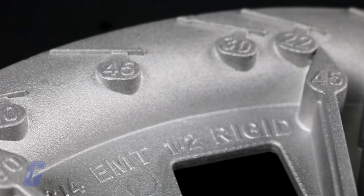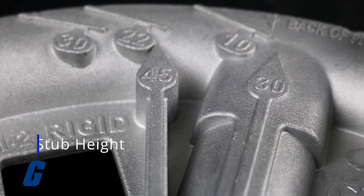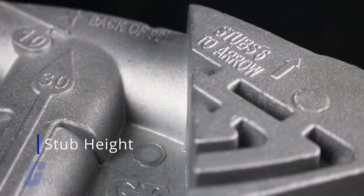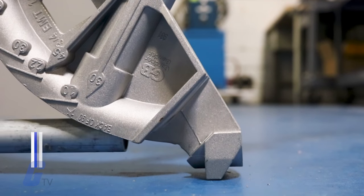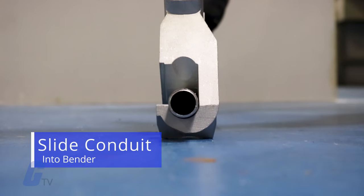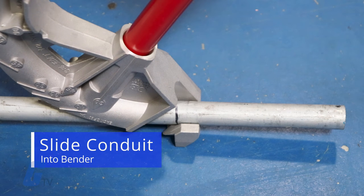Finally, you will often find a stub height mark. This mark will usually list a number like 6 inches to use for the bender take-up. Slide the conduit into the bender, leaving the appropriate amount past the arrow on the bending shoe.